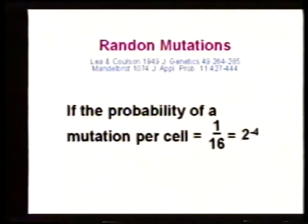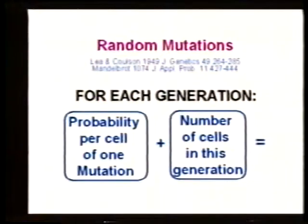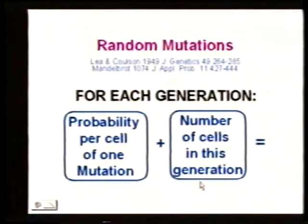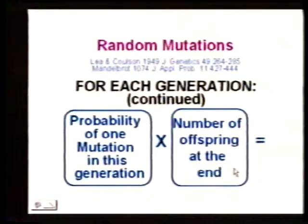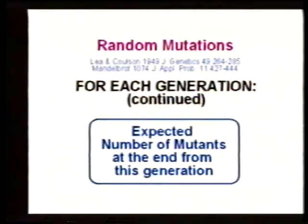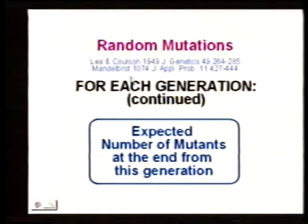Let's see why it's fractal. Let's say the probability of a mutation of a cell is 1 out of 16 — so 1 out of 16 times we'll get a mutation in each generation. For each generation, we multiply the probability per cell times the number of cells in that generation to get the probability that in that generation we get a mutation. Then each generation, we multiply the probability of that mutation times the number of offsprings it produces at the end — two raised to the number of generations — and that will give us the number of mutants at the end. You can see also that Mandelbrot, this is actually 1974, was also involved in calculating this distribution.